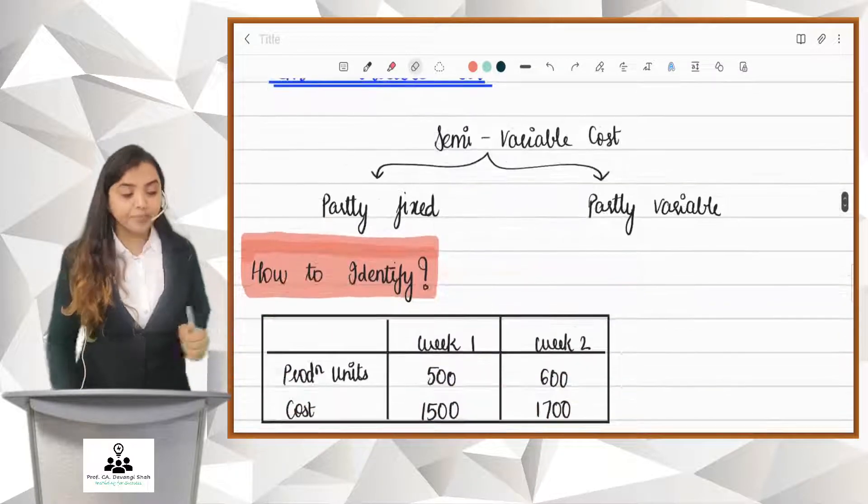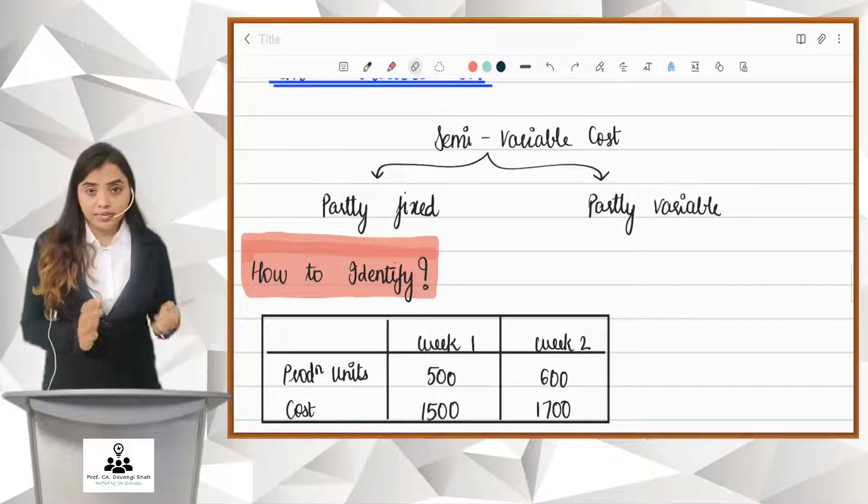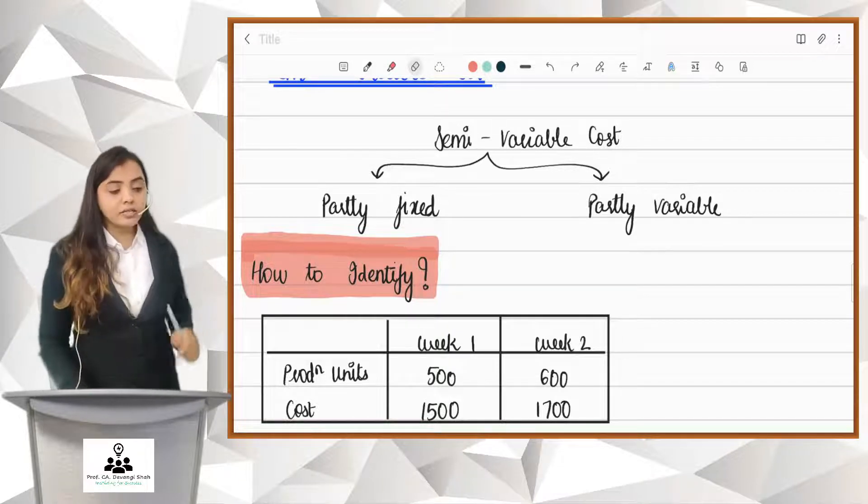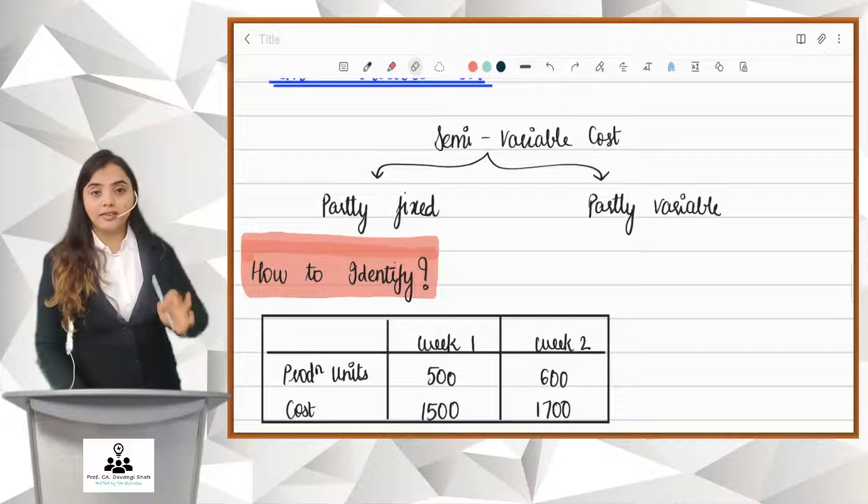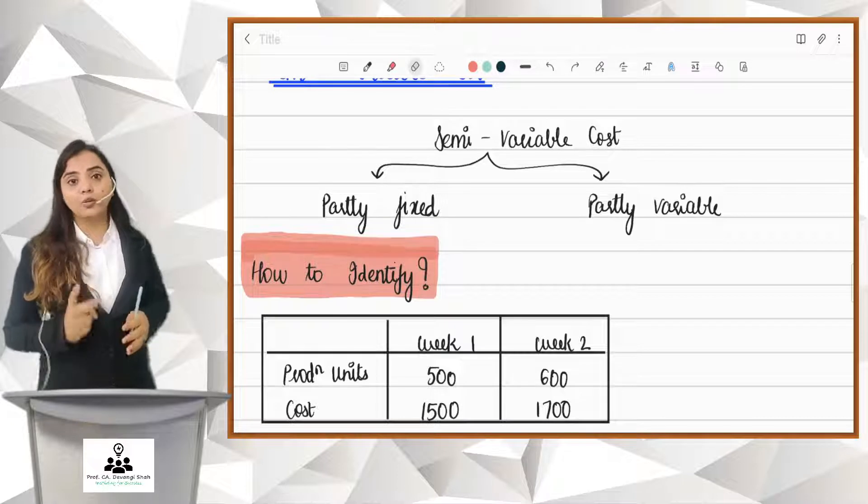Friends, look at this table. In week 1, I produce 500 units. In week 2, I produce 600 units. So, basically, my production has increased by 100 units. And look at the cost. In week 1, I incurred 1500. In week 2, I incurred 1700. So basically, my production has increased by 100 and my cost has increased by 200 rupees.